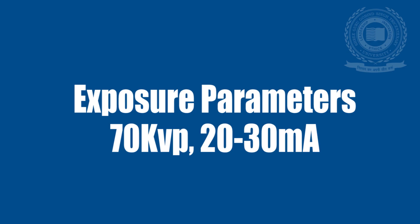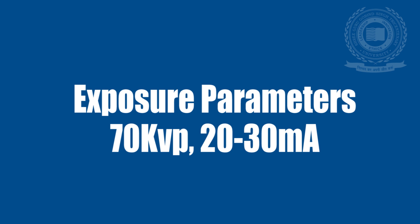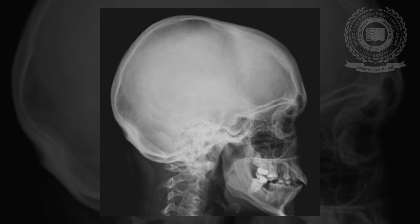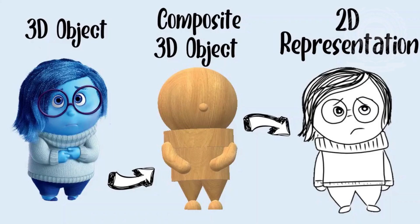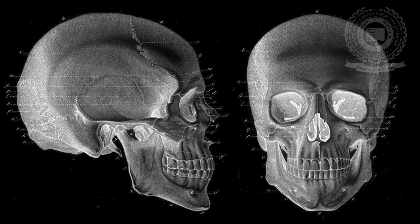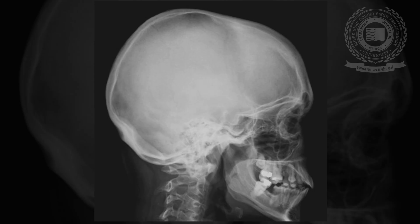The exposure parameters that can be used are 70 kV and 20 to 30 mA. The resultant image is a conventional two-dimensional representation of the lateral aspect of the skull with superimposition of the right and left halves. Structures closer to the image receptor are less magnified than structures located closer to the x-ray source, so some discrepancy in the superimposition of both sides is always evident.